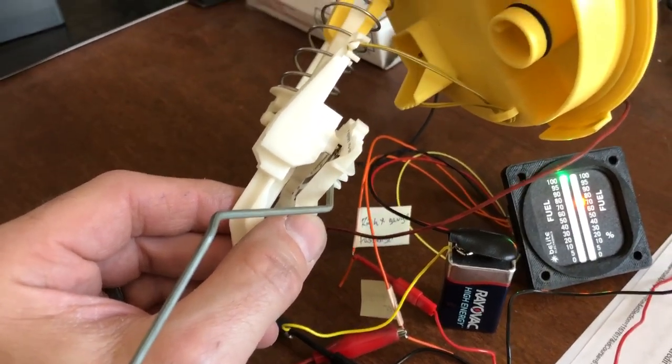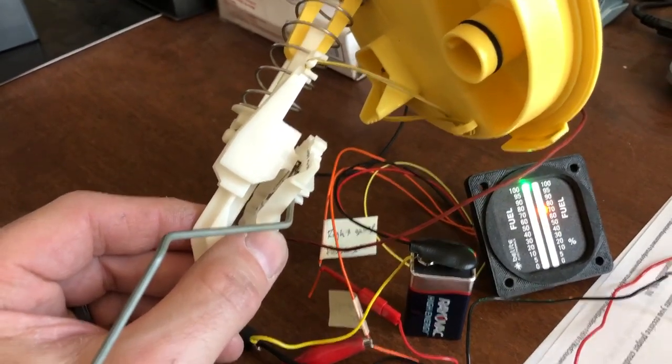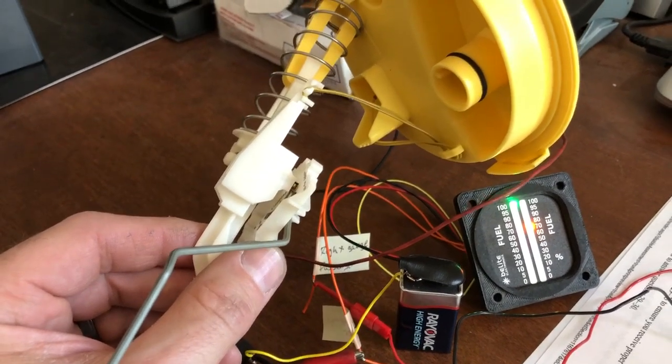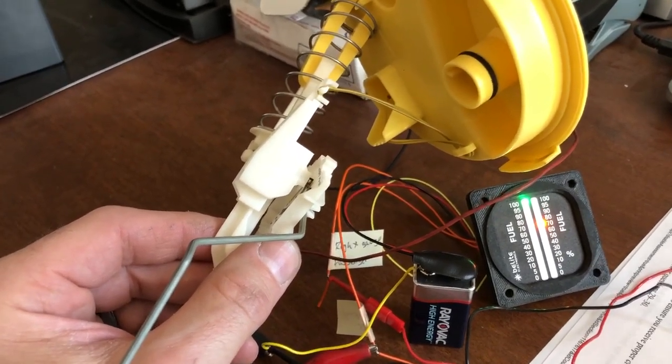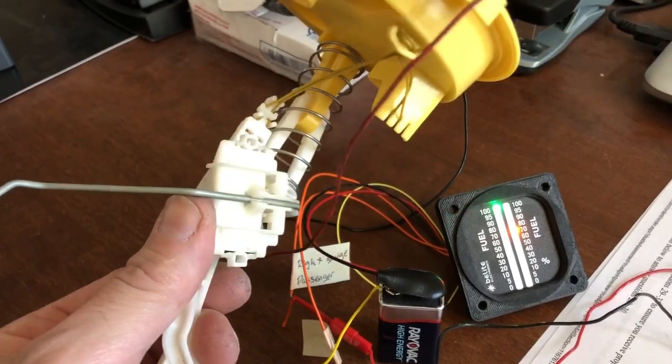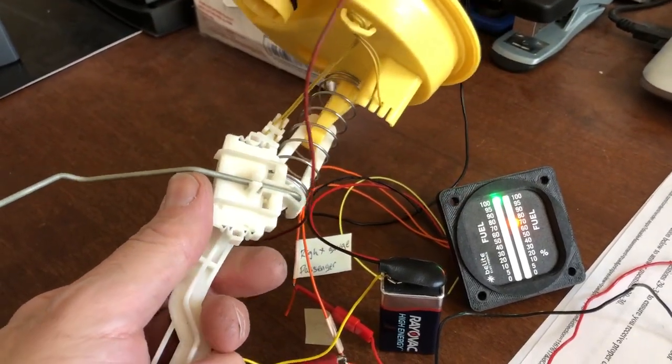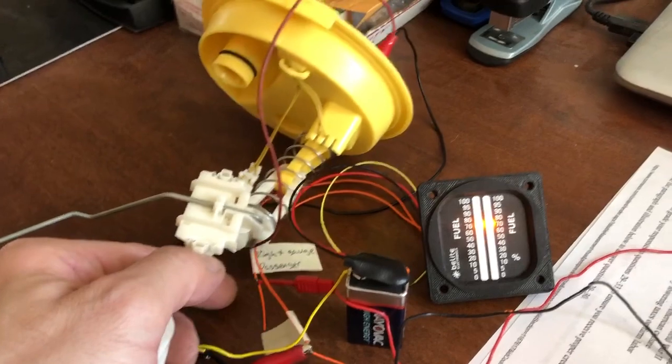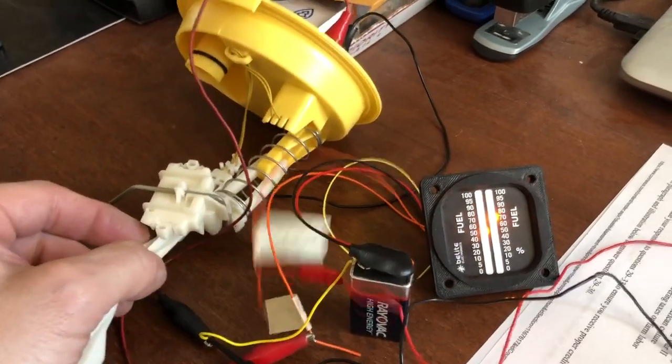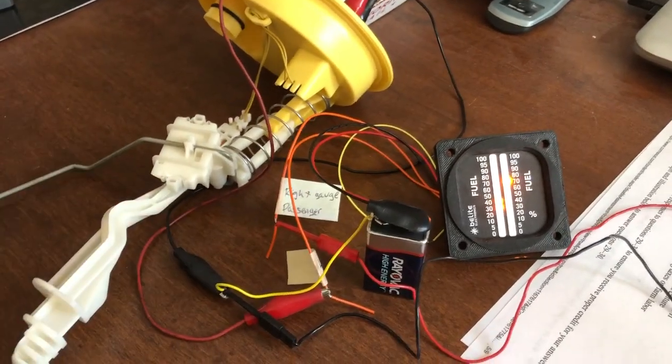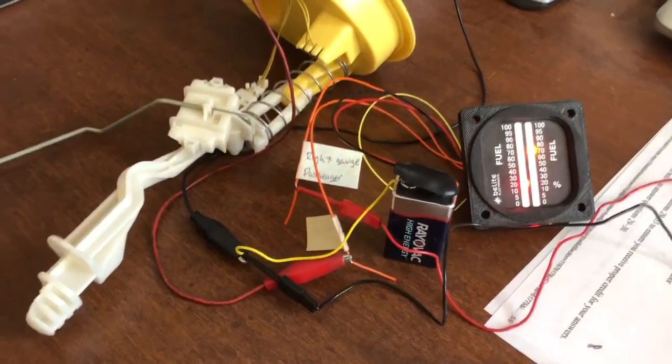Now because I have a 340 LPH fuel pump on my LS it actually evacuates the driver side of the tank faster than it does the passenger side where the pump resides, which is not a bad thing. It just does cause an issue as far as how the gauge displays when the fuel tank starts to get low.